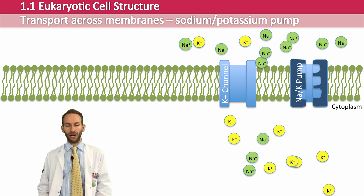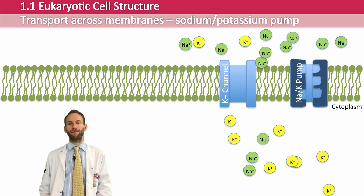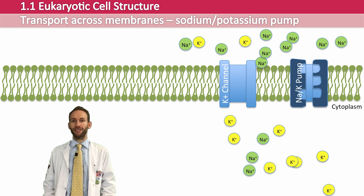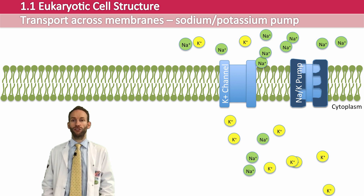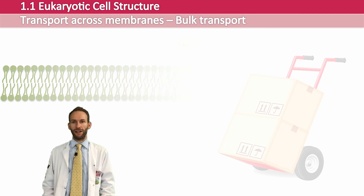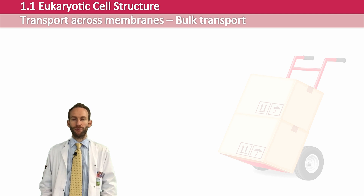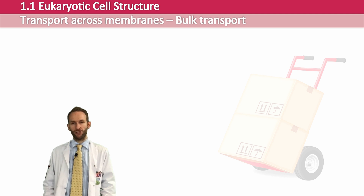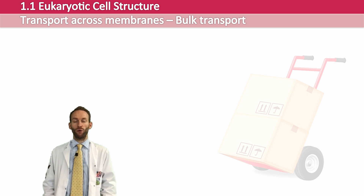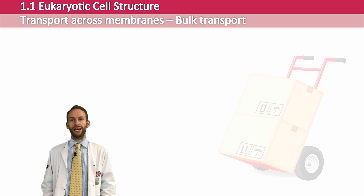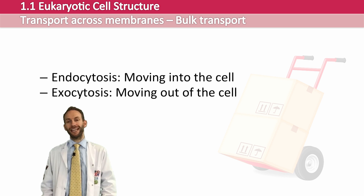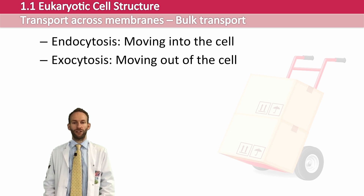You're going to learn a lot more about how that works in section 3.3 of the PreU course. Sometimes cells need to take in large quantities of material very, very quickly, or get rid of a large amount of waste very, very quickly. Carrier proteins and channel proteins are not going to be suitable for doing this, so the cell needs to carry out a type of transport which we call bulk transport. If it's moving things into the cell, it's what we call endocytosis, and if it's moving substances out of the cell, it's what we call exocytosis.